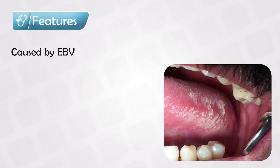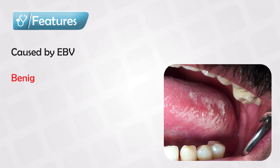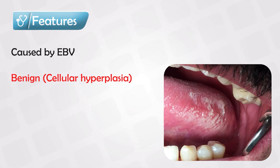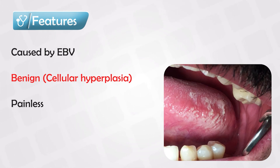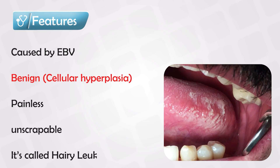Hairy leukoplakia is an Epstein-Barr virus-induced lesion, and these are squamous cell hyperplasia that are not malignant. It usually occurs on the lateral side of the tongue, and it presents as an irregular, white, painless plaque, and this plaque cannot be scraped off.